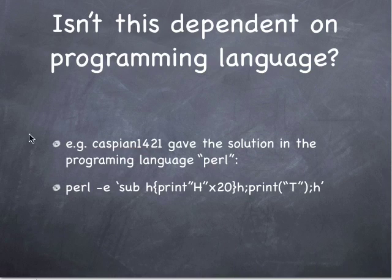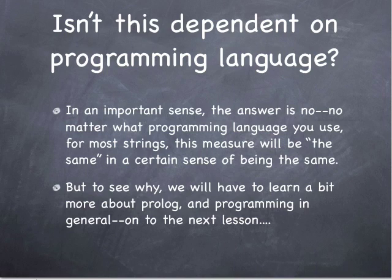Now, before we anoint this as being some sort of global thing, you might have several nagging doubts. Isn't this dependent on the programming language? For example, Caspian 1421 gave a solution in Perl. Yes, if you have different programming languages, you'll have different lengths. But there's an important sense in which the answer is no, no matter what programming language you use — for most strings, this measure will quantify the same thing. It's kind of like measuring temperature in Fahrenheit or Celsius: you're still measuring the same thing, and it still means the same thing whether it's 32 degrees Fahrenheit or zero degrees Celsius.